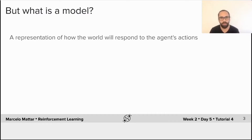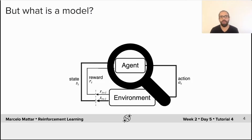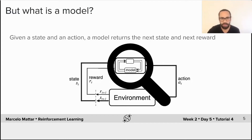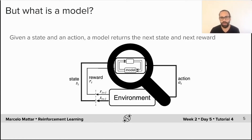What is a model? A model is a representation of how the world might respond to the agent's actions. You can think of a model as a representation of the environment that lives inside the agent. Formally, you define a model as a mathematical object such that given a state and an action, it outputs a prediction of the resultant state and reward — just like an environment works, except that it's inside the agent.